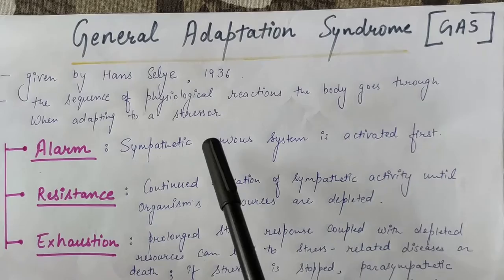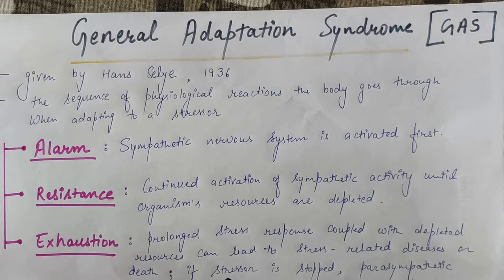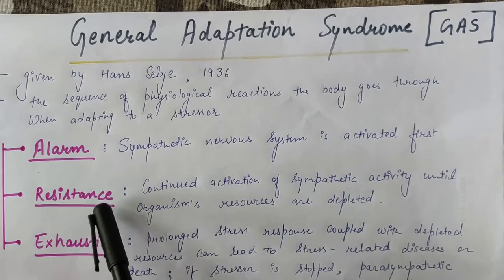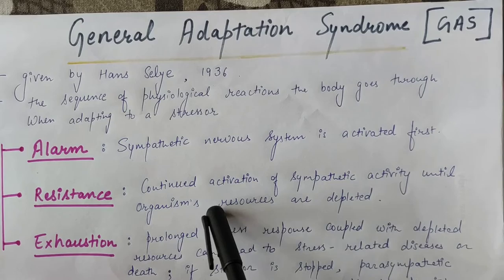The next stage is the resistance stage. We adapt to any stressor to our level. We resist so that the stressor will not reach us — it will not be converted into any disease or psychological disorder. That is why we resist our body after the alarm stage. This is a continued activation of sympathetic activity until the organism's resources are depleted.